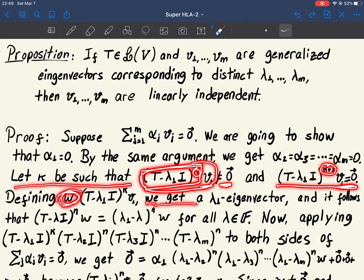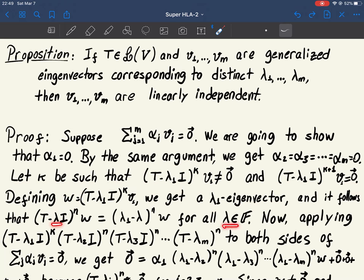So w is an eigenvector corresponding to eigenvalue lambda 1. And because it's an eigenvector, for every number lambda, T minus lambda I applied to w is just lambda 1 applied to w minus lambda times w.